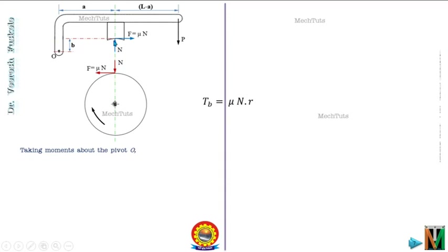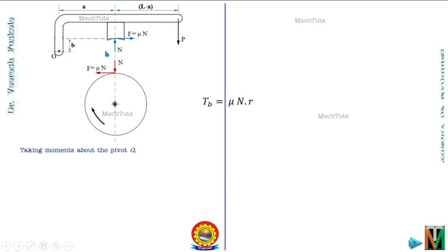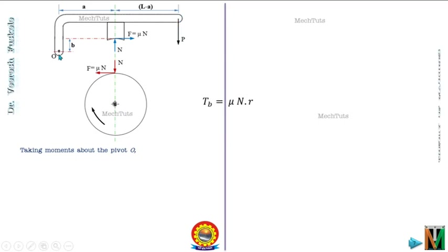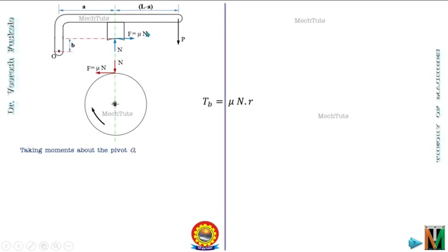The moment of N about the fulcrum point is N × a, the perpendicular distance of its line of action from the fulcrum. This is in the anticlockwise direction, so it is a positive moment. Force P rotates the lever in the clockwise direction, so its moment is negative: P × l. Similarly, force F = μN rotates the lever clockwise about the fulcrum, giving a negative moment of magnitude μN × b.